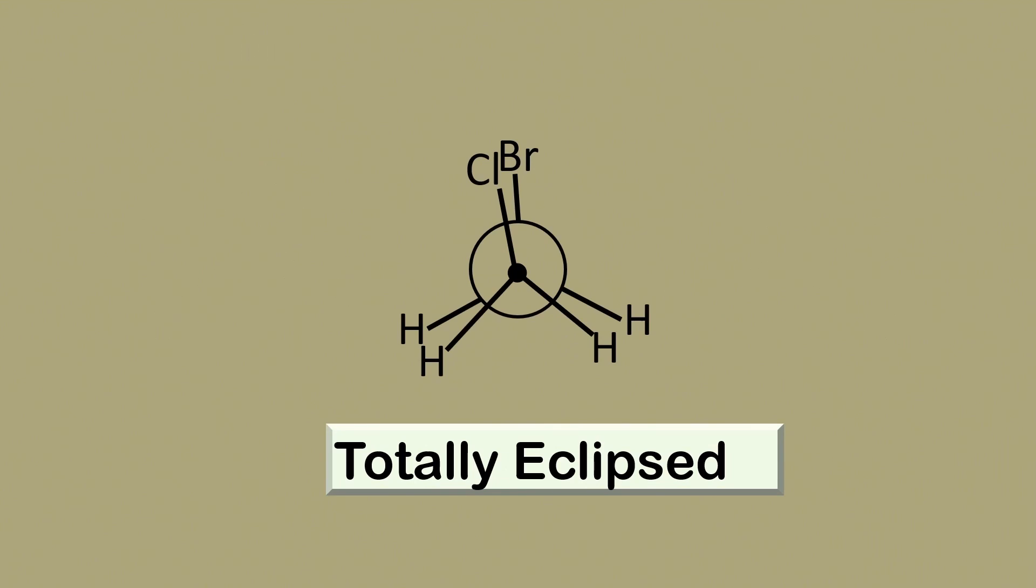And finally, the molecule can rotate to achieve a totally eclipsed conformer, in which the heavy groups are at 0 degrees apart. This is the least stable conformer, because there is maximum repulsion between the electron densities, on the atoms and also in the bonds.